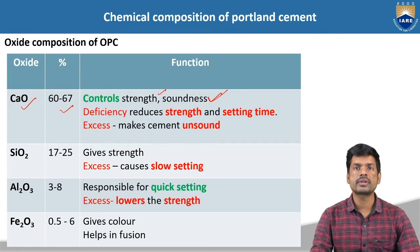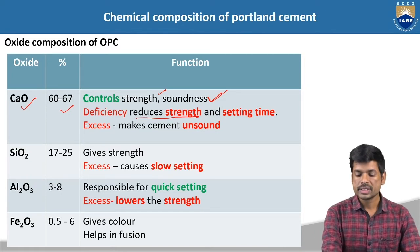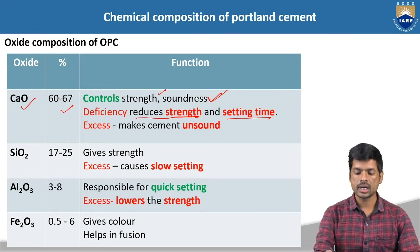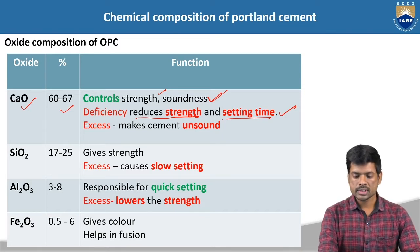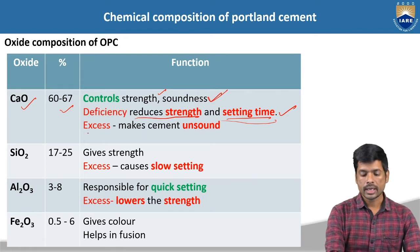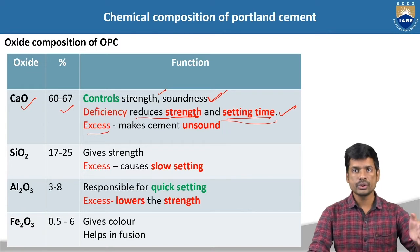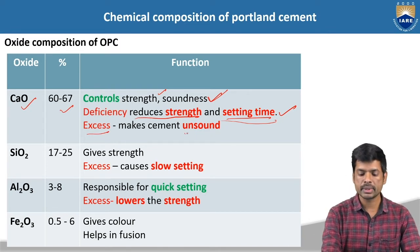If you use less amount of calcium oxide while manufacturing of cement, that is going to reduce the strength and setting time. The strength will be reduced and that is also going to affect the setting time of cement. Coming to the excess amount of calcium oxide — we have to use up to only 60 to 67%. If you use more than 67%, that is going to make the cement unsound — it may get cracks in the cement paste after casting the components.